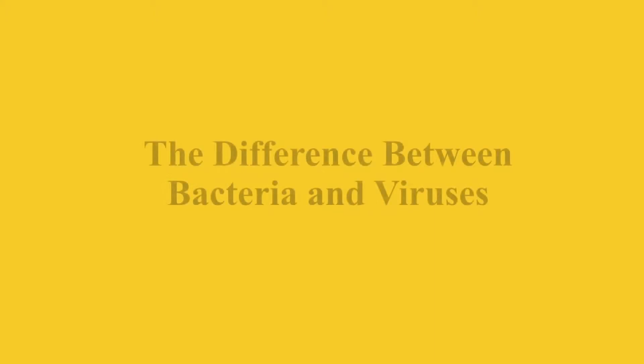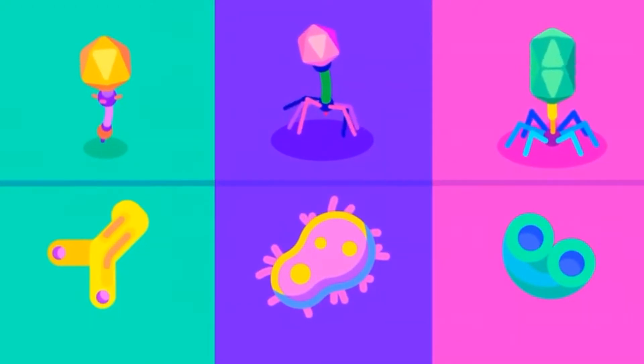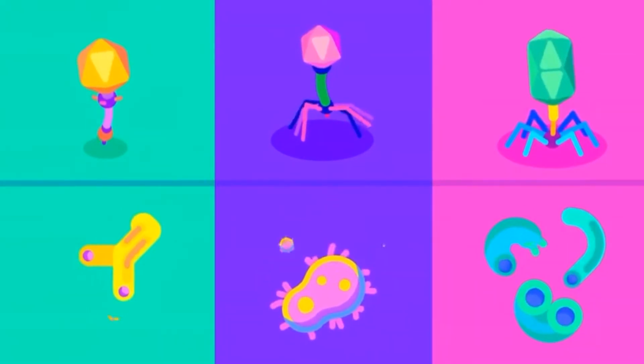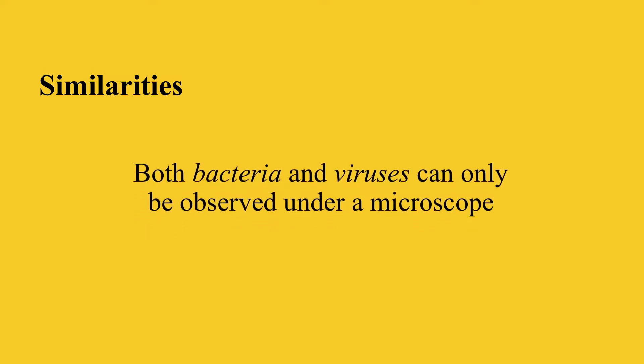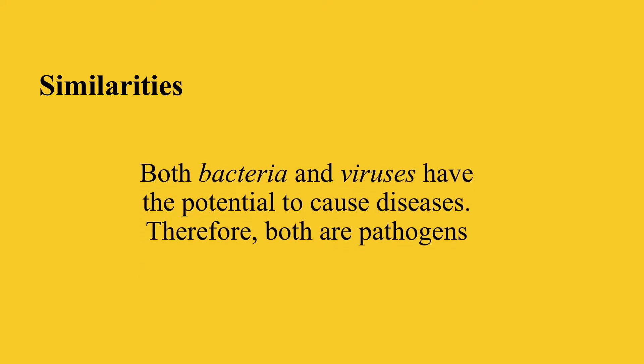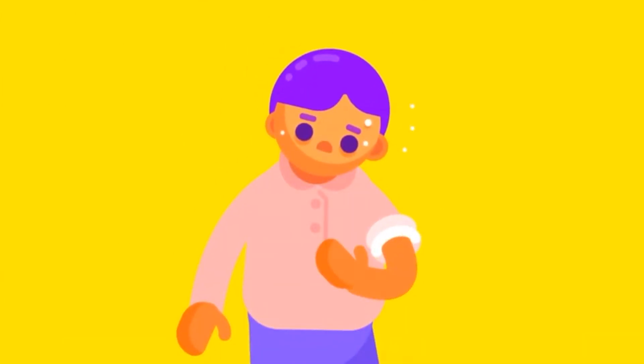Let's look at the difference between bacteria and viruses. To better understand the differences, let's first look at their similarities. The first similarity is that both bacteria and viruses cannot be observed by the naked eye — they can only be seen through the use of a microscope. Both bacteria and viruses can cause diseases and therefore are considered to be pathogens.